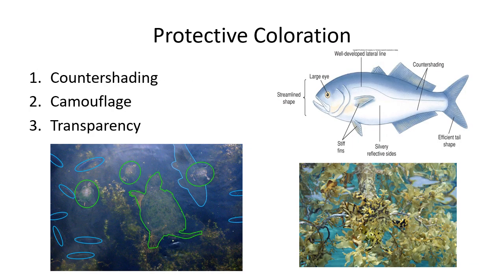Protective coloration includes camouflage, but also being transparent — transparent organisms blend into the transparent water around them. Counter shading is another strategy: being dark on top and light on the bottom means that when looking down, you're camouflaged against the dark water, and when looking from above, you're camouflaged because light shines from above. By being countershaded, an organism is camouflaged in both directions. A fish hiding among brightly colored seaweed is hard to see, making it harder for predators to spot.